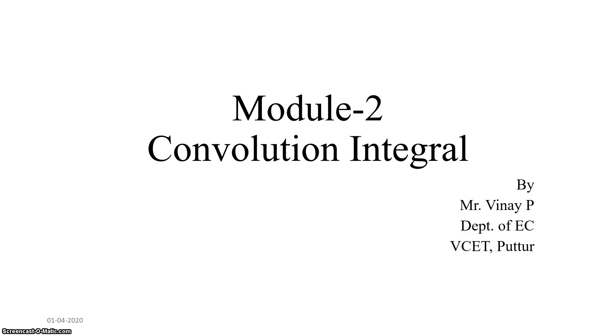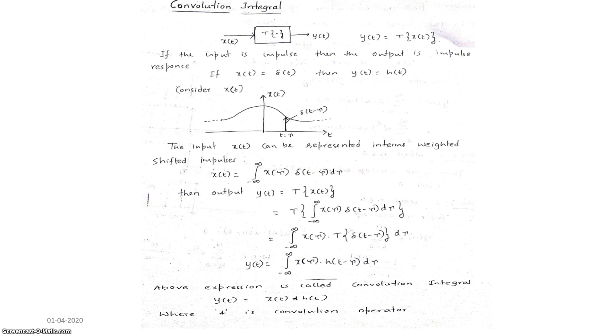Hello everyone. Today we will discuss the convolution integral, that is the impulse response representation for a continuous time system. In the last video we discussed the convolution sum, which is applicable for a discrete time system. First we will discuss the derivation for a convolution integral. The block diagram representation of the continuous system is given below, where x(t) is the input signal, y(t) is the output signal, and T is the transformation operator. So the output y(t) is equal to T of x(t).